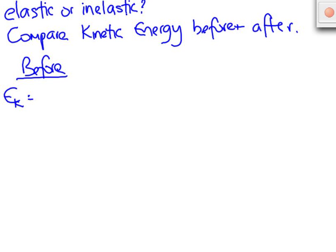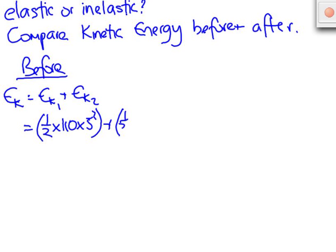Before the collision takes place, the total kinetic energy available is equal to the sum of the kinetic energy of each of the players. So for the forward that's one half times his mass of 110 kilograms times the square of his speed which was 5 meters per second. To that we'll add kinetic energy of the back, that's one half times his mass of 85 times the square of his speed which was 7.